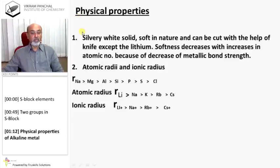The physical properties of alkali metals: These metals are silvery white solid, soft in nature and can be cut with the help of knife except lithium. Softness decreases with increase in atomic number because of decrease of metallic bond strength.